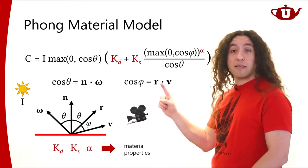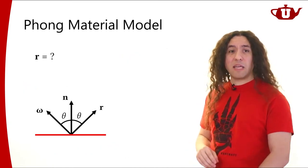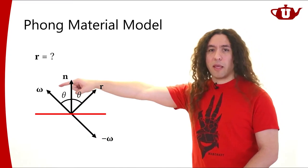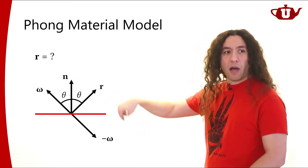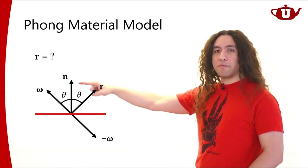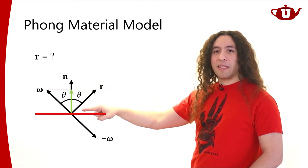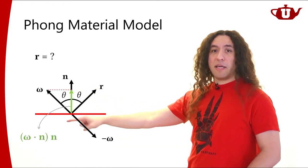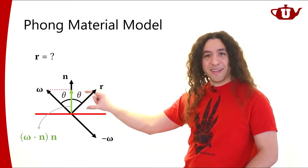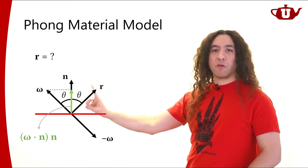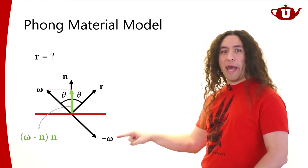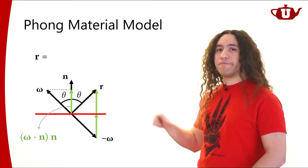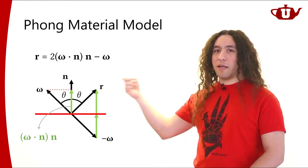To compute the model we need the dot product of N and omega for cosine theta, and the dot product of R and V for cosine phi. The perfect reflection direction R is computed as: take the opposite of the incoming light direction, take its dot product with N to get the length (cosine theta), multiply that by N to get a projected vector, then add twice that vector to get R. The formula is R = 2(N dot omega)N - omega.